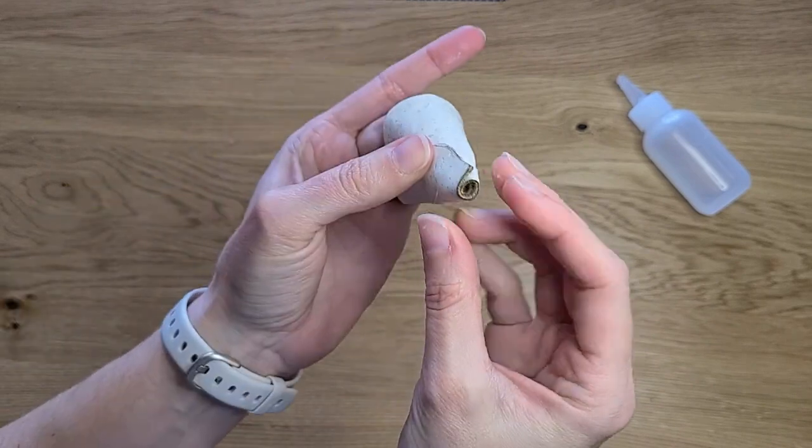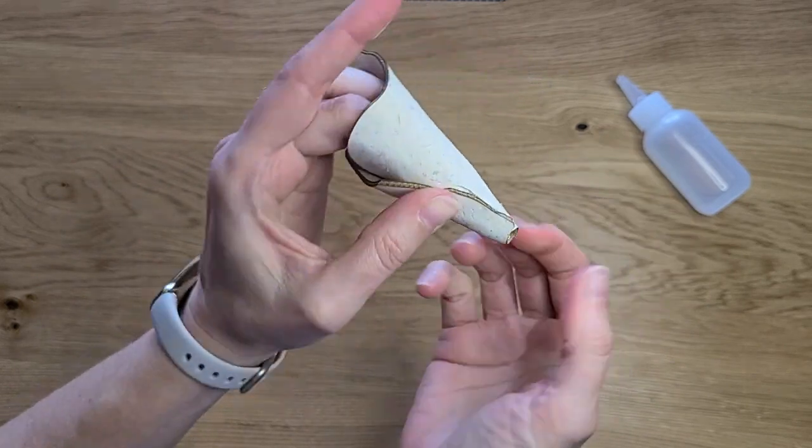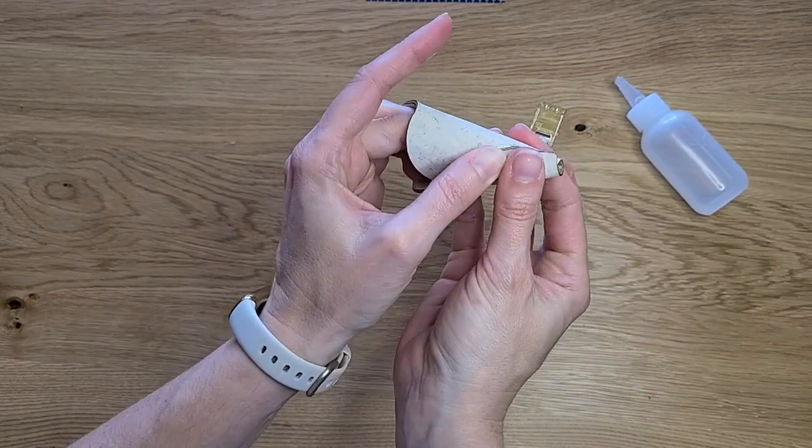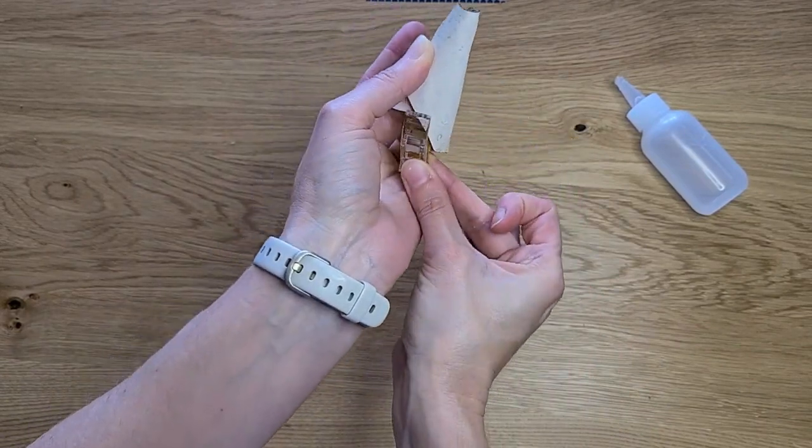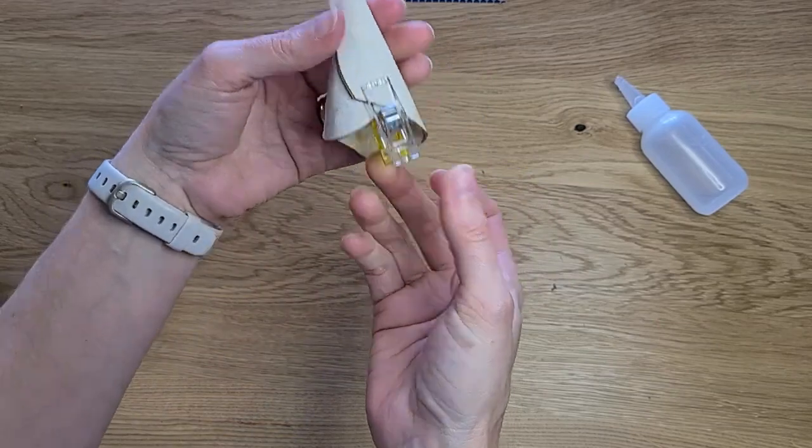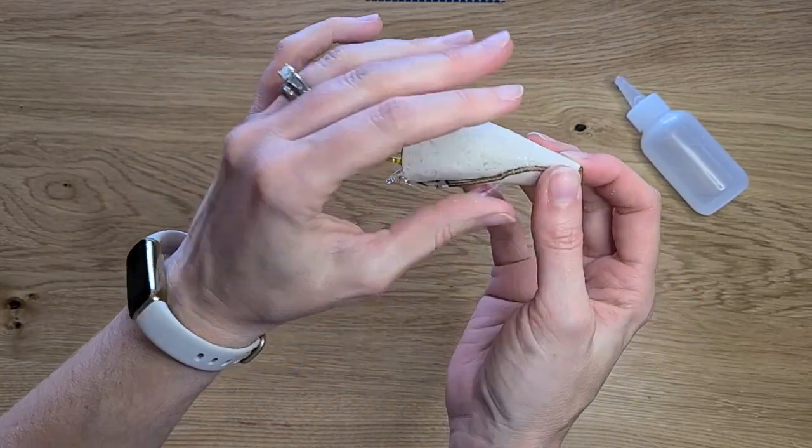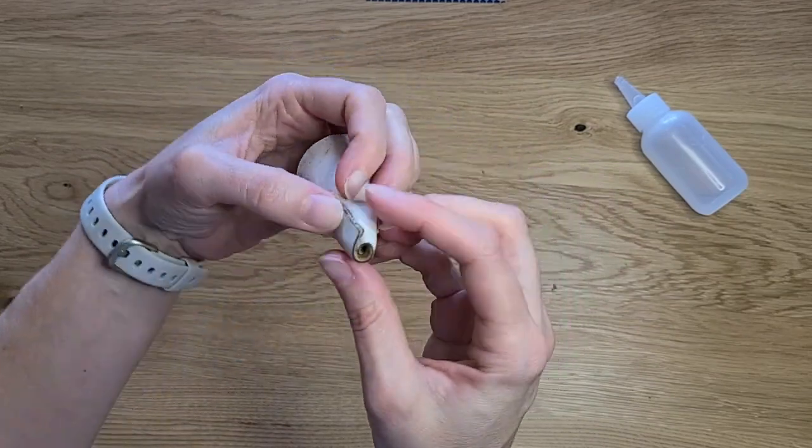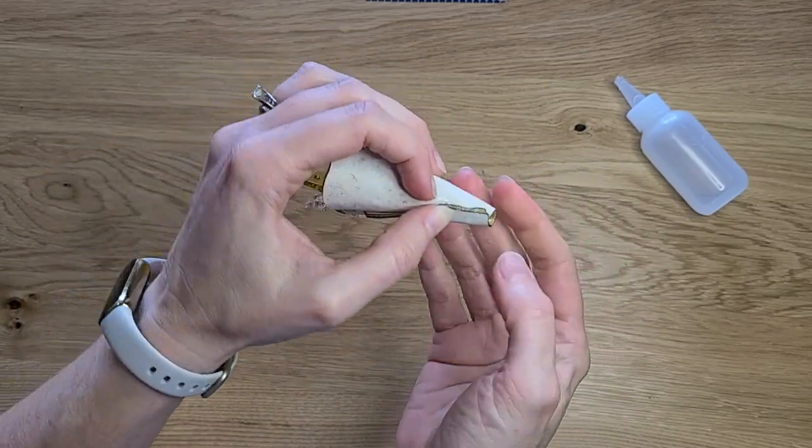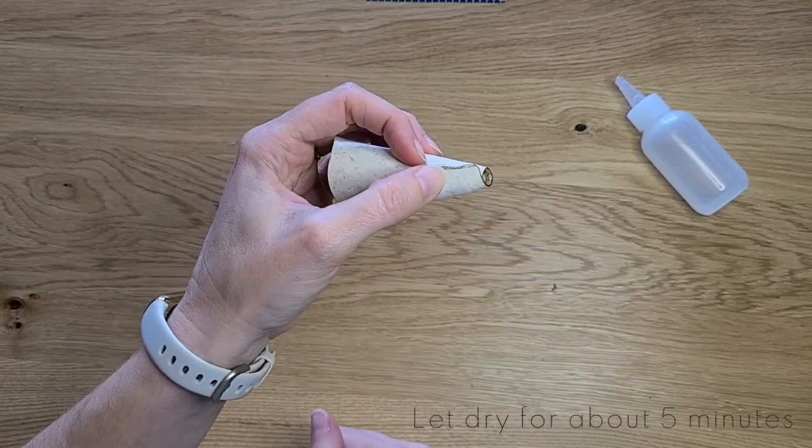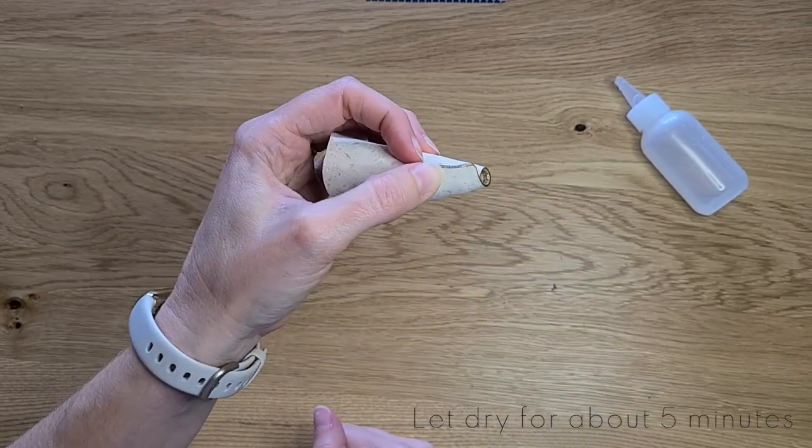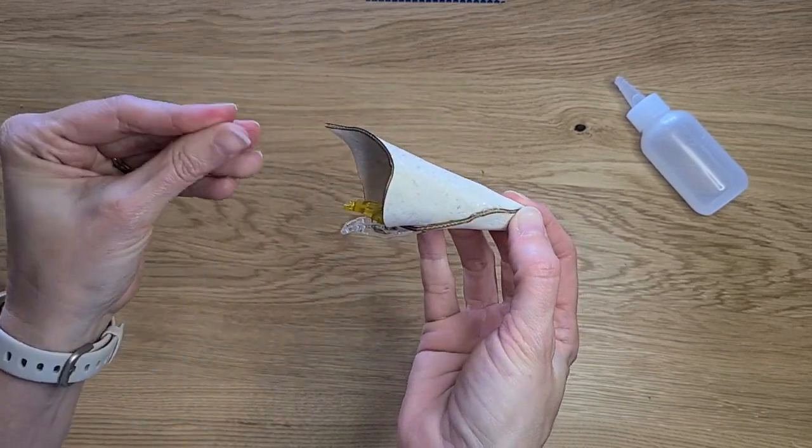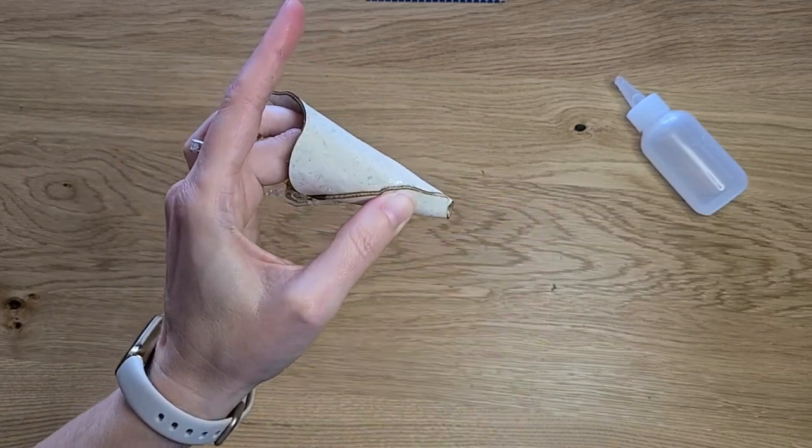This is where a sewing clip or binder clip will come in handy. If you clip this up here, that will hold it in place so you don't have to worry quite as much about holding everything steady. You want to give this a minute or two to sit and let the glue set and dry, and then we will move on to putting the stem in. You'll be almost done.